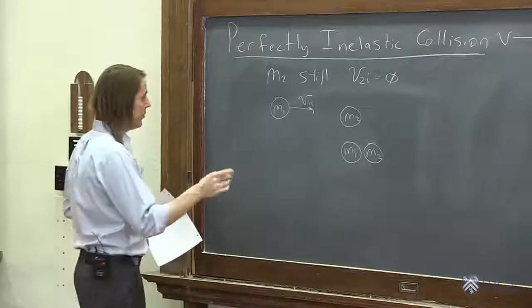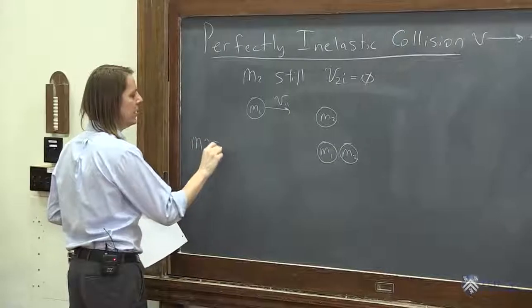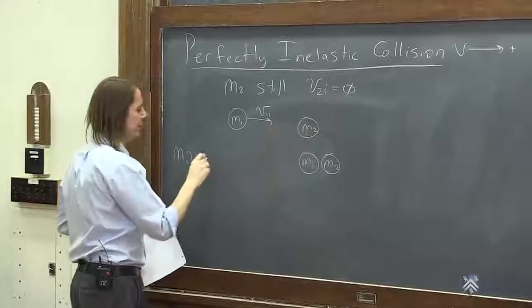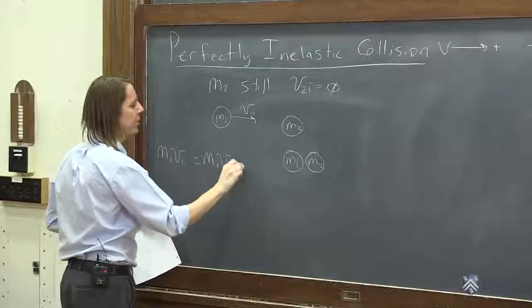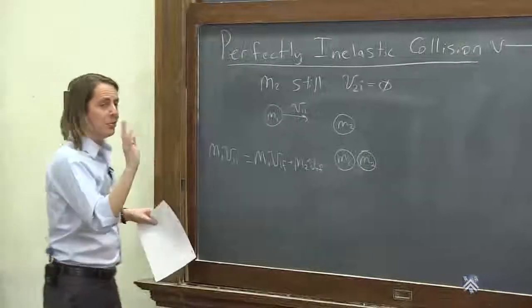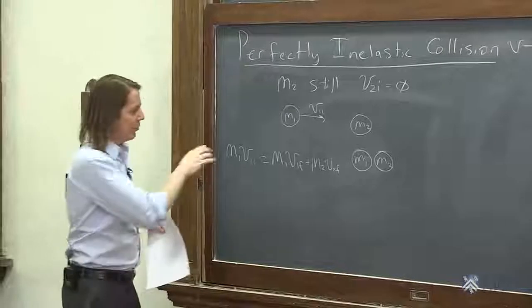So we know that we can conserve momentum. We know that we have M1, V1 initial. We have zero momentum here for the initial case, because it's not moving. So we'll go ahead and say that's equal to M1, V1 final, plus M2, V2 final. So we have two unknowns, V1 final, V2 final. We have one equation.